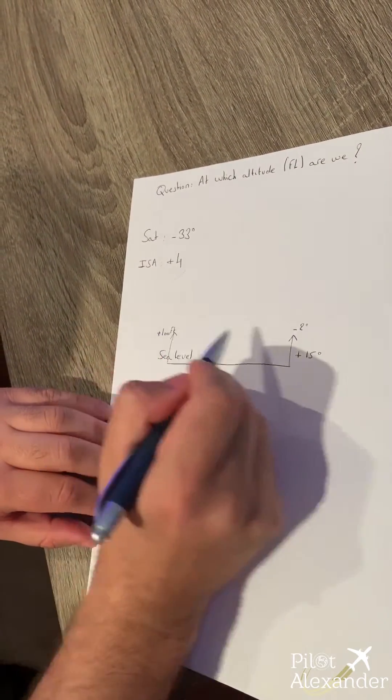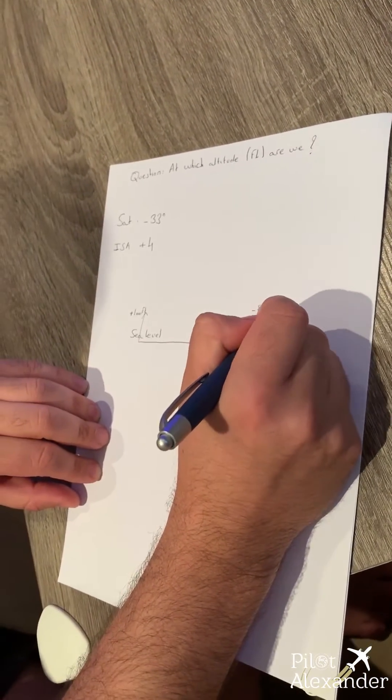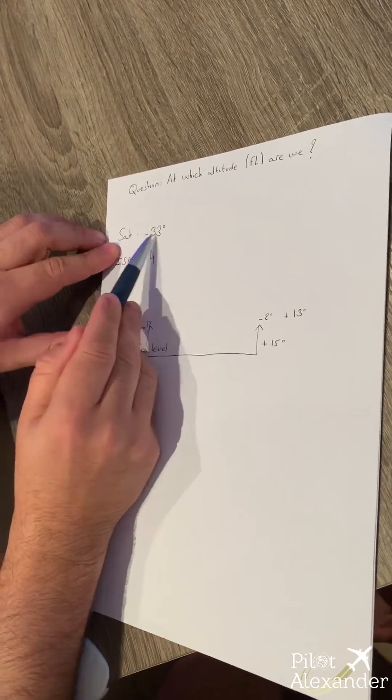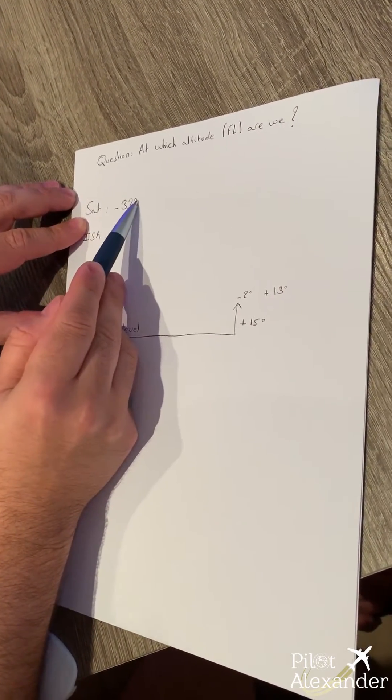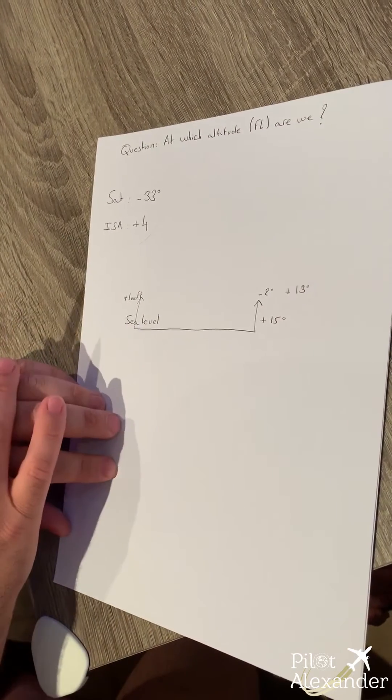So at one thousand feet, we should be at plus 13, exactly 13 degrees Celsius. Now, at minus 33 degrees, at which altitude are we? That's the first question.